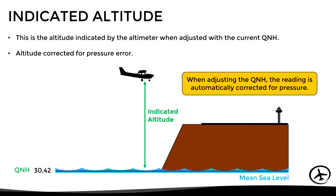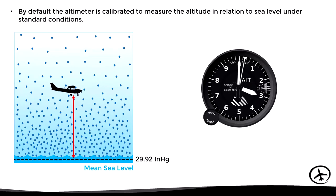We need to change the barometric reference in order to obtain the correct altitude indication. By default, the altimeter is calibrated to measure the correct altitude above sea level under standard conditions. As we already know, under standard conditions the pressure at sea level is 29.92 inches of mercury or 1013 hectopascals.